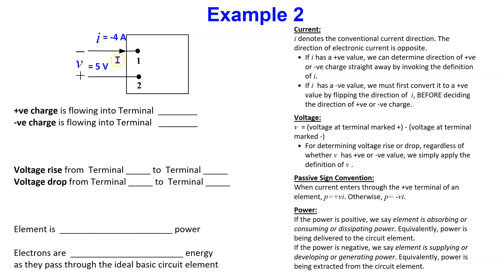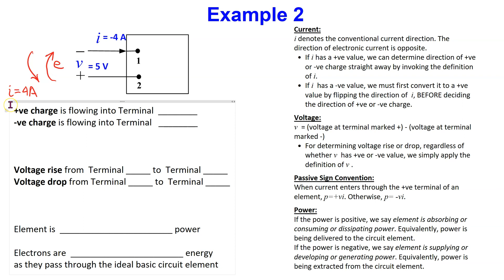Since current has a negative value, we must first convert it to a positive value by flipping the direction of current, before we decide the direction of positive and negative charge. This is a necessary step when current has a negative value. So conventional current of minus 4 amps flowing in this direction is equivalent to conventional current of 4 amps flowing in the opposite direction. The direction of electronic current is opposite to conventional current, therefore positive charge is flowing into terminal 2, whereas negative charge is flowing into terminal 1.